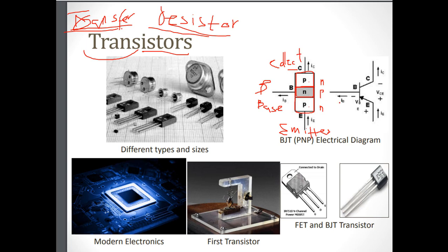This is the equivalent circuit diagram — one side shows the physical structure and the other shows the electric diagram. The arrow direction on the emitter indicates the type. There are two types of transistors: BJT and FET. Any transistor is basically a combination of two diodes, two junctions — a first junction and a second junction.